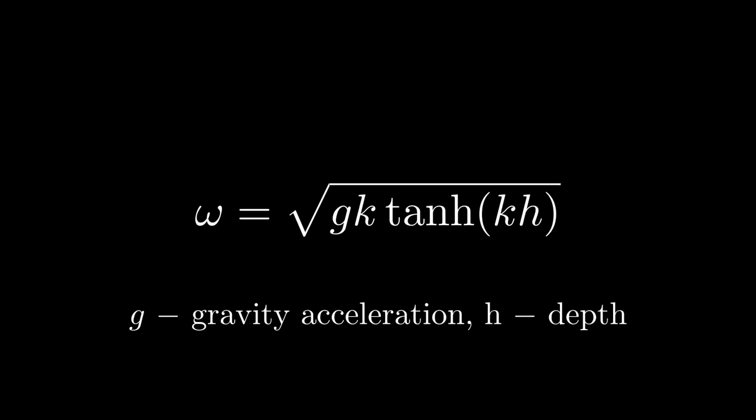Here G is gravity acceleration and H is water depth. The only parameter left is complex amplitude. The process of wave creation is largely random. However, while amplitude of any particular wave is random, on average they obey some laws. For example, longer waves tend to have larger amplitude, or waves traveling perpendicular to the wind direction are a lot smaller than the ones going along it.